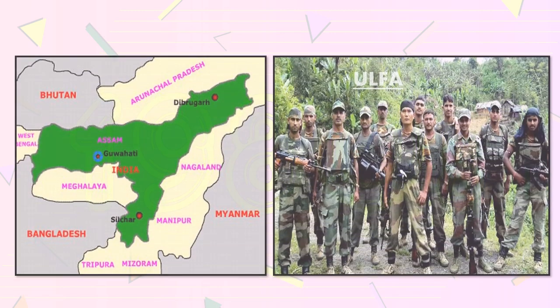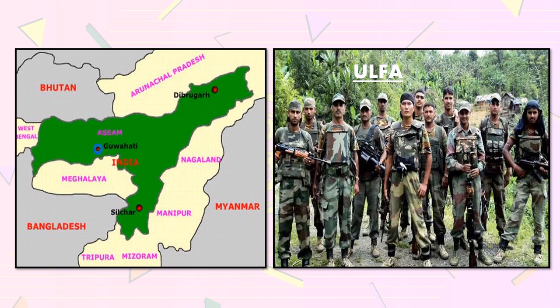The United Liberation Front of Assam (ULFA) is an extremist organization reportedly formed in 1979 in the northeastern Indian state of Assam. The group was thought to be formed by a few Assamese rebels with the purpose of forming a separate country of Assam, independent of Indian rule.